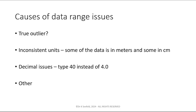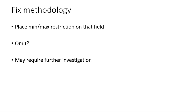What causes data range issues? You have to do some investigating. Is it a true outlier — is it really just somebody who did really well or really poorly? People have extremes in weight and height. Is it an inconsistent unit issue? This can be a little hard to detect — maybe some data is entered in meters and some in centimeters. Decimal issues used to be a common one, particularly when people did stuff handwritten, because a decimal point entered as 4.0 might end up in the database as 40 instead of 4.